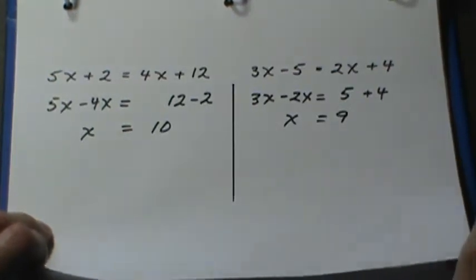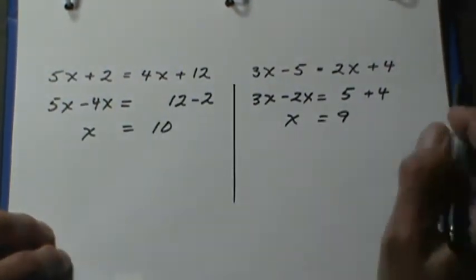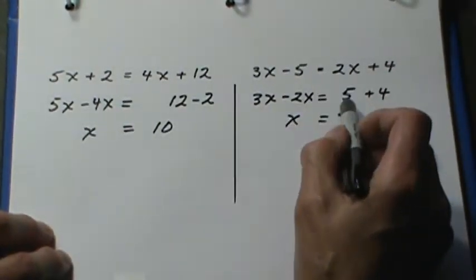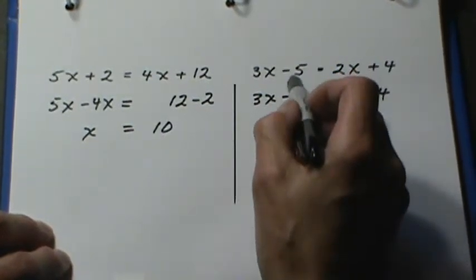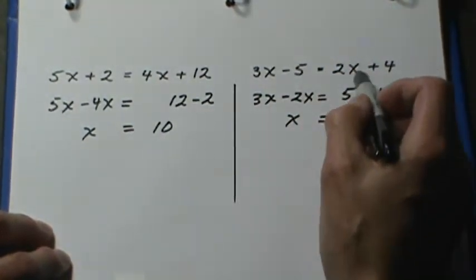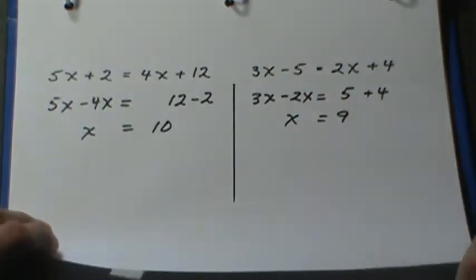Now remember, I'm doing the same thing to both sides. It's just that the shortcut makes it look like you're not really doing that. But I have increased both sides by 5 and subtracted 2x from both sides.